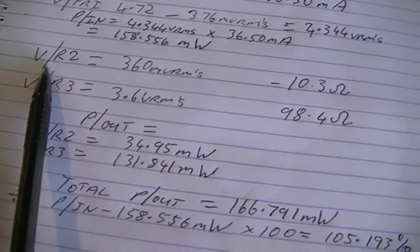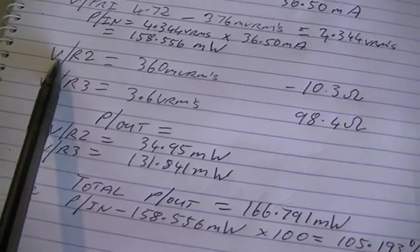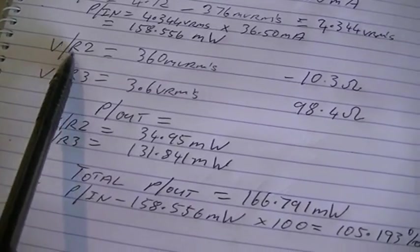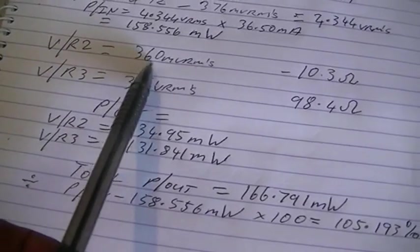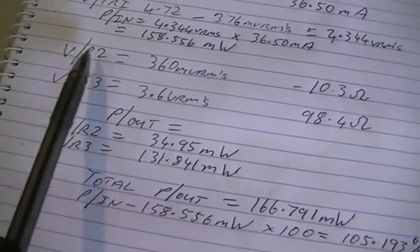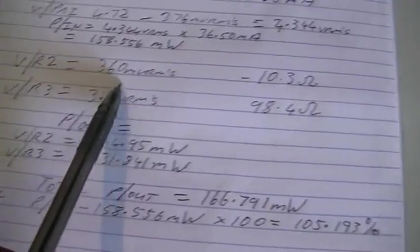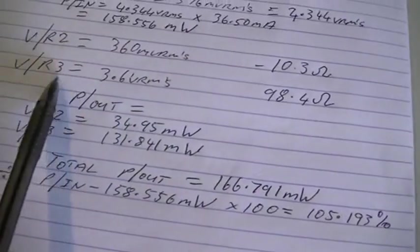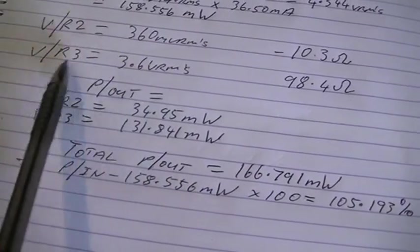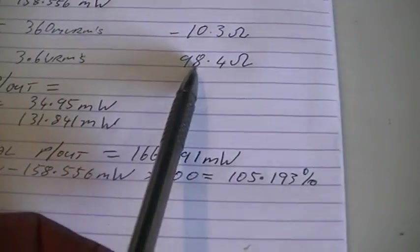The output, as I showed, is a little easier. We have a known voltage across the known resistance of 360 millivolts across R2, which is 10.3 ohms. And we have 3.6 volts RMS across R3, which is 98.4 ohms.